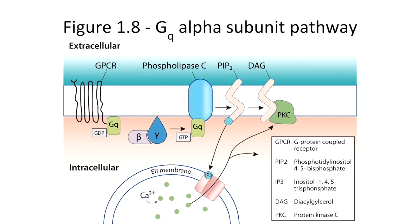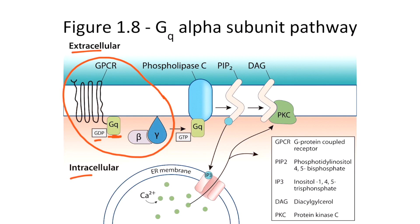This is Figure 1.8, which outlines the normal GQ alpha subunit pathway. This is the extracellular space and the intracellular space. This is the G protein coupled receptor. Notice how the receptor interacts with, or is coupled to, the GQ alpha subunit, which is bound to GDP. The G protein is also comprised of the beta and the gamma subunits. When a ligand binds to the receptor, the receptor undergoes a conformational change, which causes the GQ alpha subunit to exchange GDP for GTP. The GQ alpha subunit then dissociates from the receptor and the other subunits in order to bind phospholipase C. Phospholipase C is an enzyme that cleaves PIP2 into IP3 and DAG.